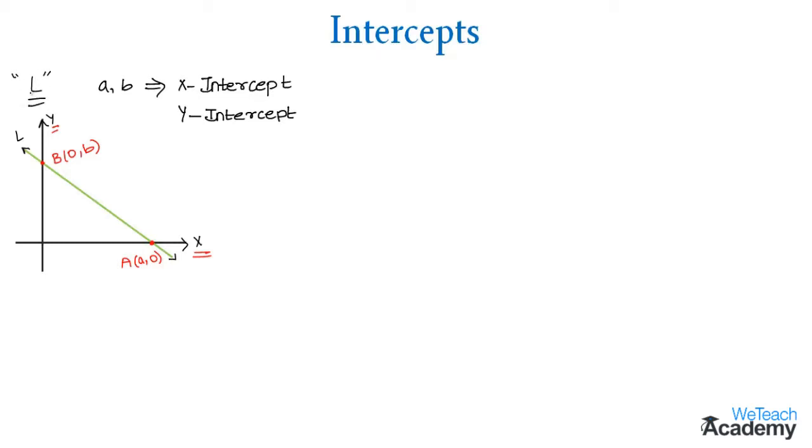So depending upon these values of A and B, the position of the line AB will be discussed. As here A is greater than 0 and B is also greater than 0, we can say that the line AB lies in quadrant 1.